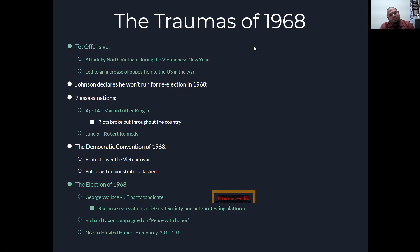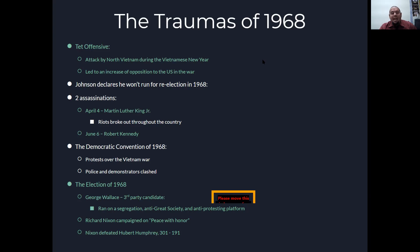Traumas of 1968. 1968 was a bad year. You have the Tet Offensive, which is the Vietnamese New Year — it was an all-out attack from North Vietnam invading South Vietnamese cities, where Americans were largely caught off guard because it was their new year and they didn't think they would be attacked. They were wrong, and this is going to lead to an increase in opposition to the war.